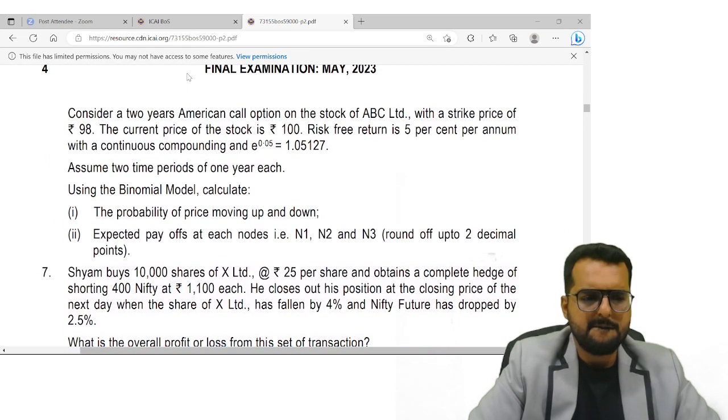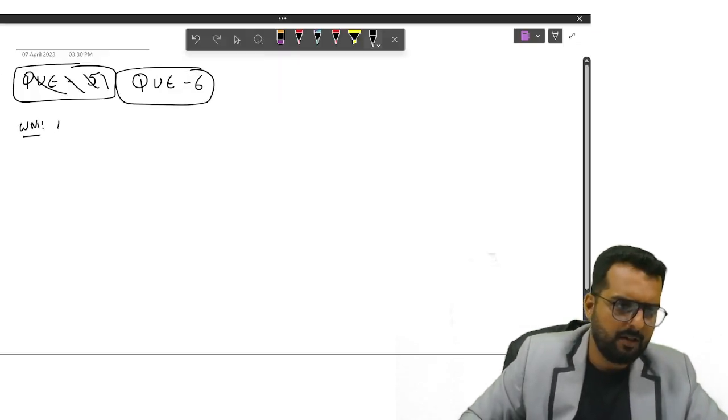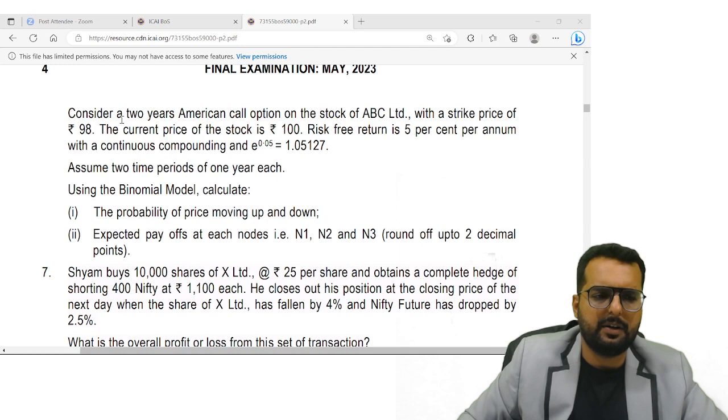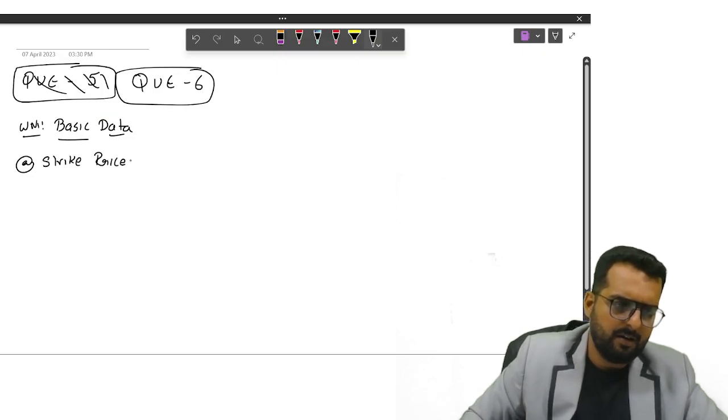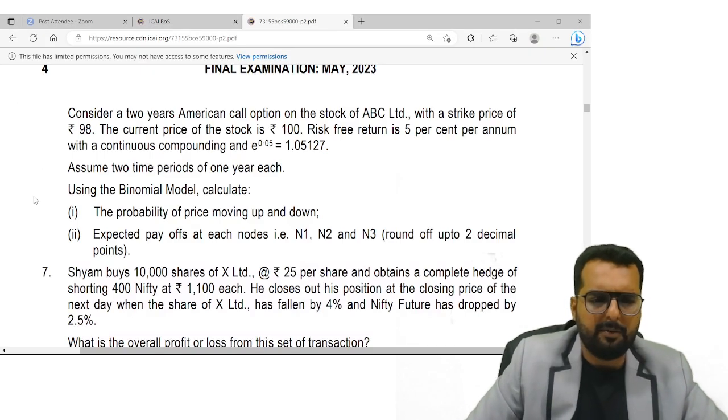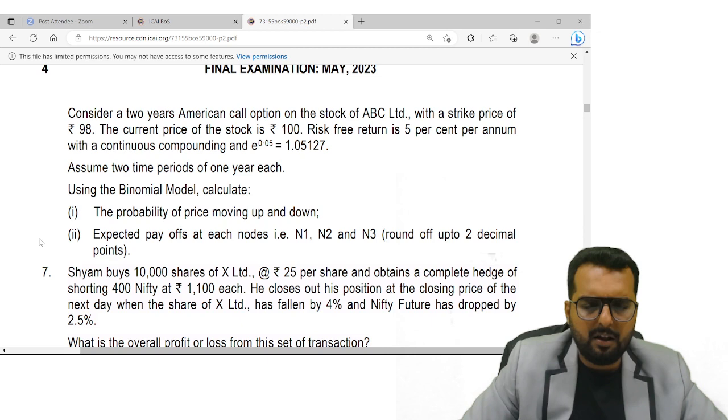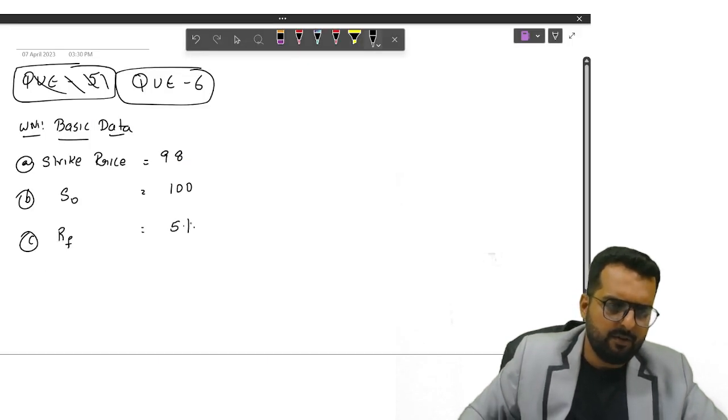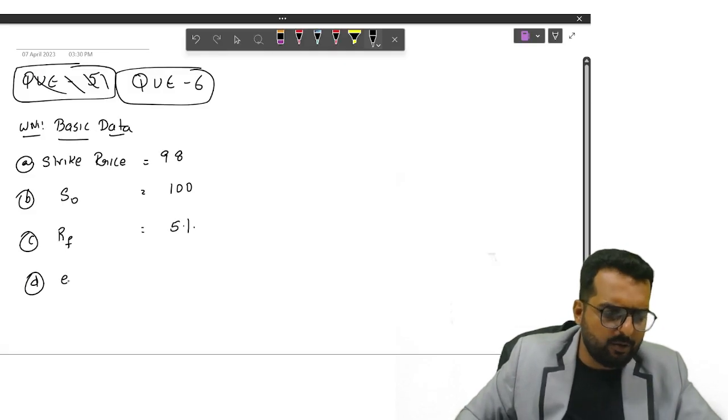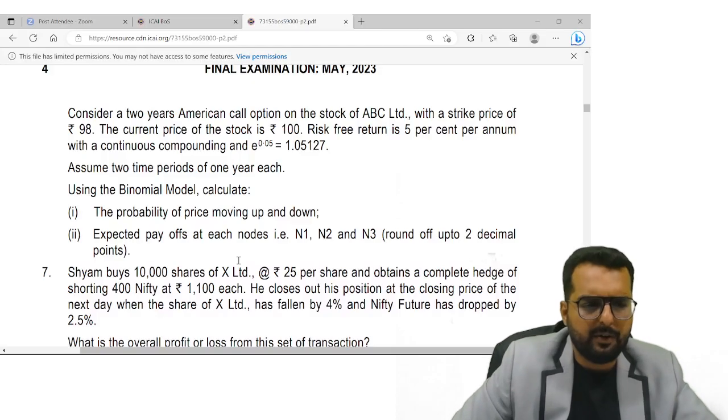Strike price is given as 98, so I will write down over here. Then I will write down point number A, strike price is 98. Point number B, current price S0 is equal to how much? 100. RF is how much percentage? 5 percentage. The continuous compounding rate is given, so E raise to RT is given over here, 1.05127. Alright.